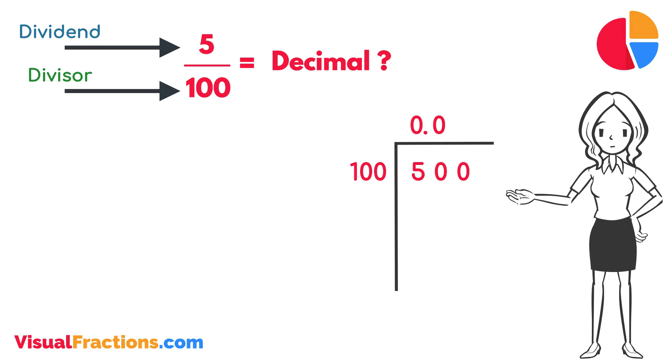How many times does 100 go into 500? Exactly 5 times. We write 5 after the decimal point in the quotient, making it 0.05.